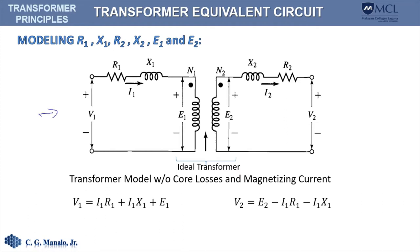What we did here is simply to separate the resistance and the reactance of both the primary and secondary windings, leaving an ideal transformer at the center of the model. In both the primary circuit and the secondary circuit, we can write the KVL equation. These are the KVL equations at the primary, and this is the KVL equation at the secondary.